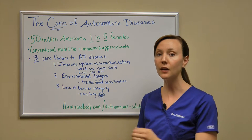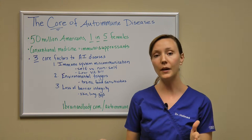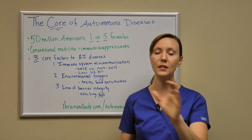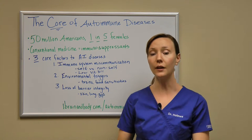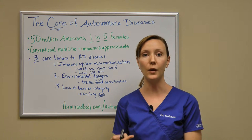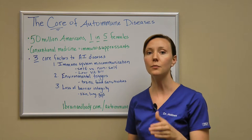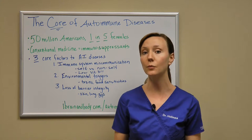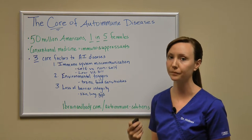Ultimately all autoimmune diseases are the same. However, it depends on what tissue is being attacked, and that's what gives each its name. For example, in Graves and Hashimoto's, your thyroid is being attacked. In multiple sclerosis, it's your nerves that are being attacked. But ultimately, this is an immune system miscommunication.